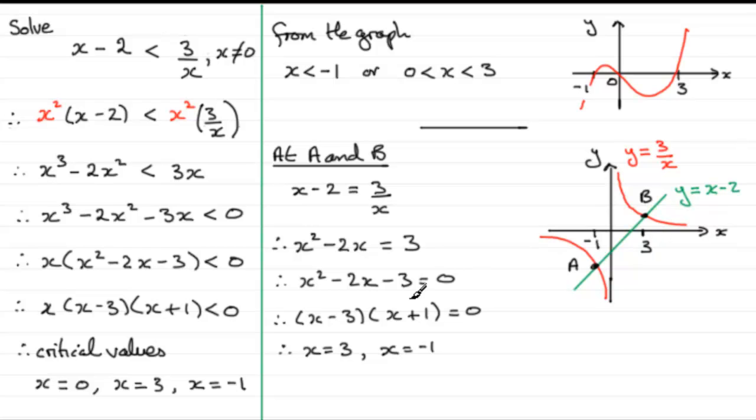Now, as I said earlier, if we're looking to find out then where x minus 2 is less than 3 divided by x. Remember, x cannot equal 0 though, alright? If we're asked to solve this, we're looking for where the green graph is below the red graph.